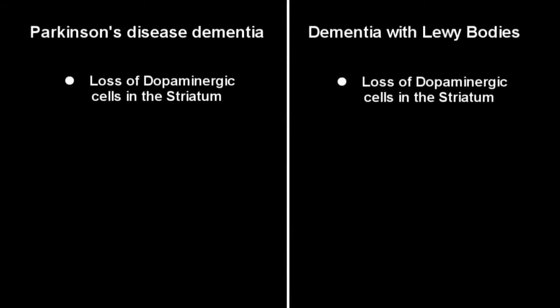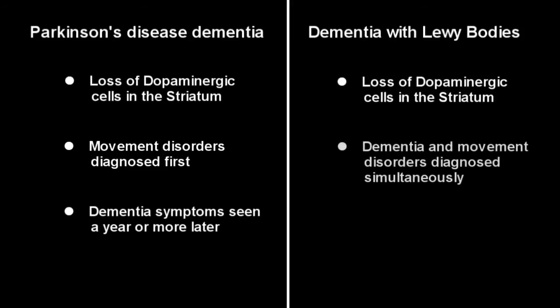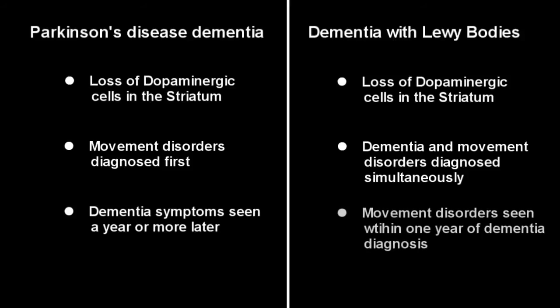Let's differentiate between the dopamine-related dementias: Parkinson's disease dementia and dementia with Lewy bodies. While both entities, like Parkinson's, are associated with loss of dopaminergic cells in the brain, the onset of dementia relative to the movement disorders defines the disease process. In Parkinson's disease dementia, the characteristic movement disorders are diagnosed first and dementia symptoms appear a year or more later. In dementia with Lewy bodies, the dementia and movement disorders are diagnosed simultaneously, or movement disorders are noted within one year after the onset of a dementia diagnosis.